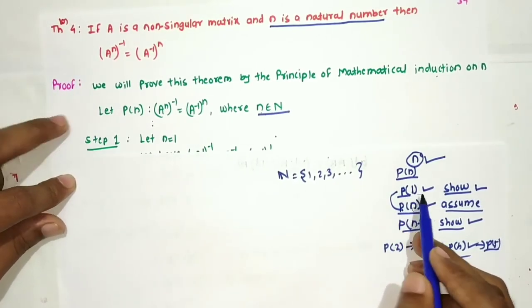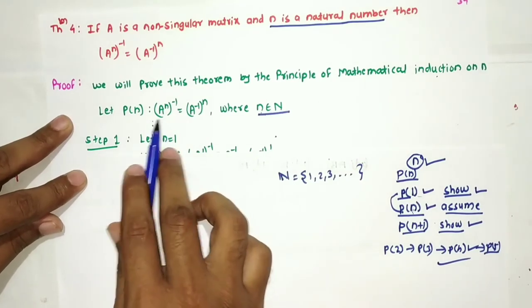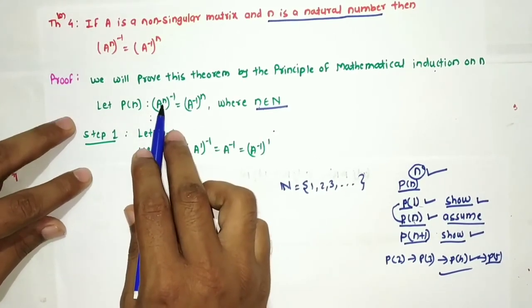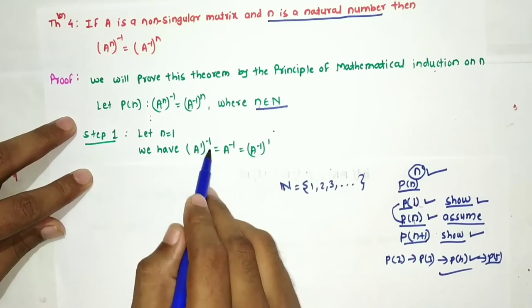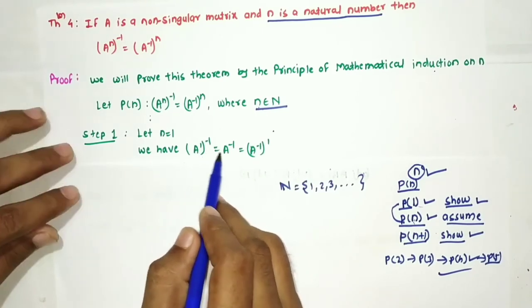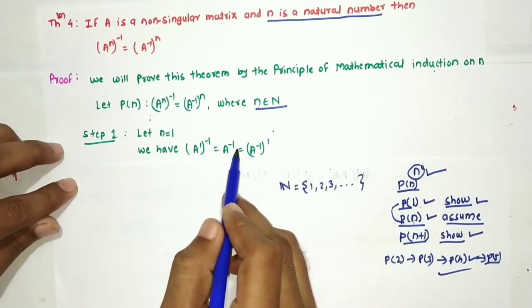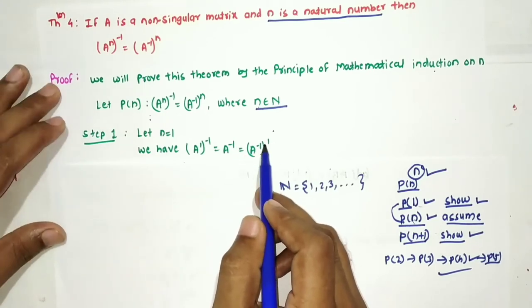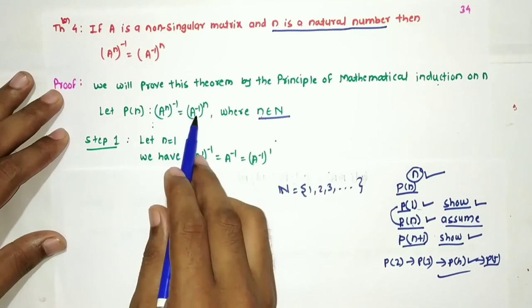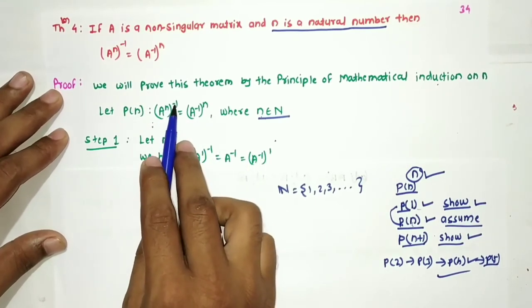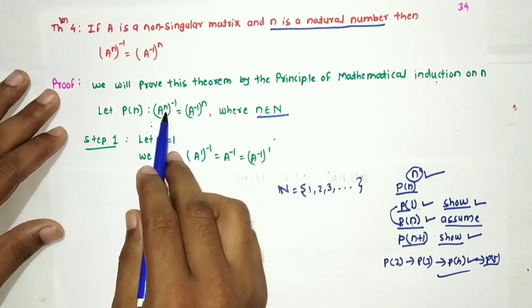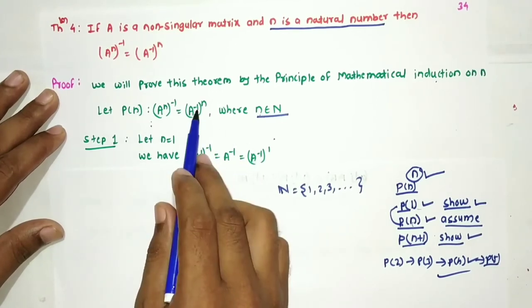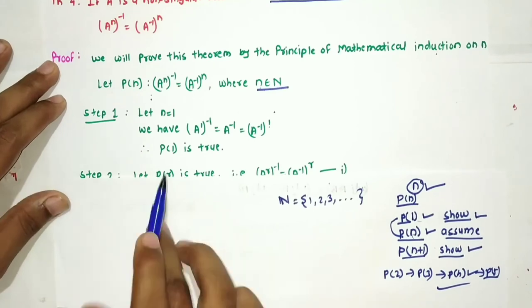Step 1: Show the statement holds for n=1. We have (A¹)⁻¹ equals A⁻¹, which equals (A⁻¹)¹. Hence P₁ is true.